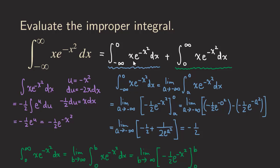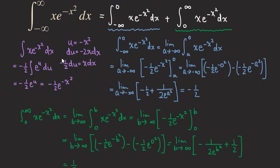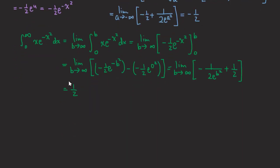Since both integrals converge, our original integral from negative infinity to positive infinity is convergent. Adding the two values: −1/2 plus 1/2 equals 0. So the answer is 0, and the integral is convergent.